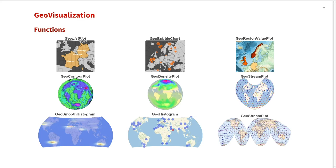The names of these functions give you some idea of what visualization functions are used to make these plots. We have GeoListPlot, which is based off of ListPlot; GeoDensityPlot based on ListDensityPlot; and so forth. Before looking at examples, let's classify these plots into different categories based on the kinds of data they handle, since the data specification and the options controlling different layers are key tools for unifying geographics and data visualization.